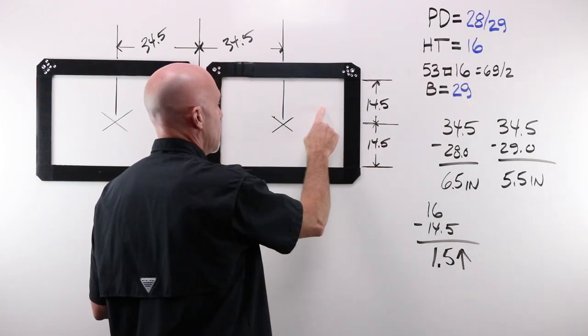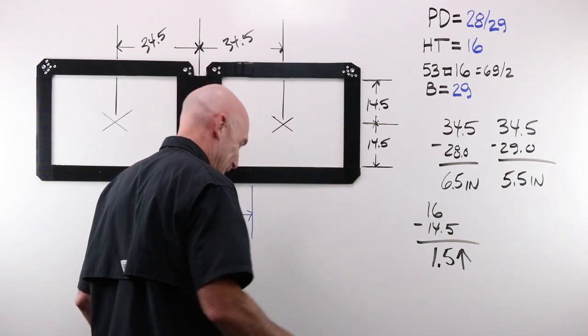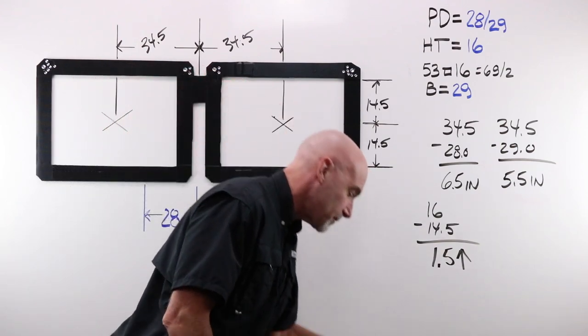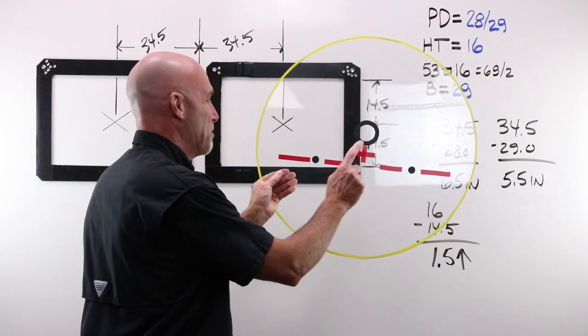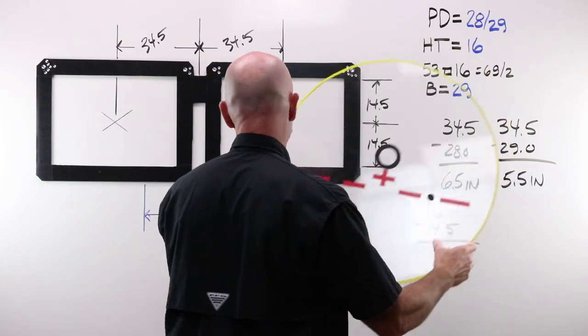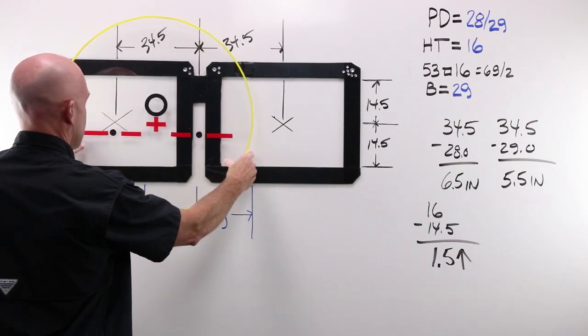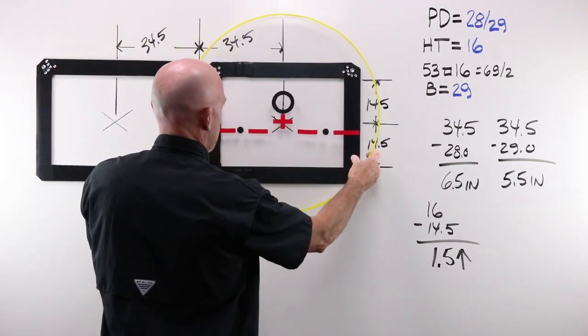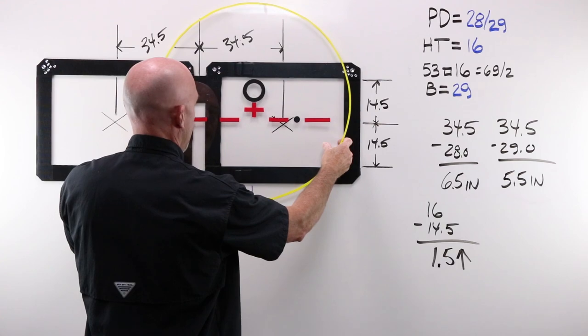16 is higher, more than 14.5. When I did a measurement for this person, I wanted the fitting cross to appear 16 millimeters above where the lens would sit within the eye wire in the boxing system. I will be taking my super lens and I will be taking my fitting cross and I will be moving it over six and a half and up one and a half. Take my fitting cross and moving it five and a half over and one and a half up.